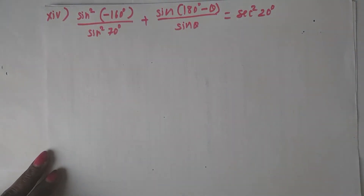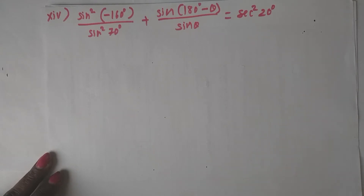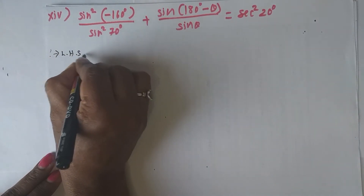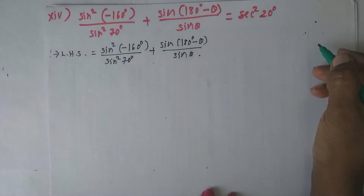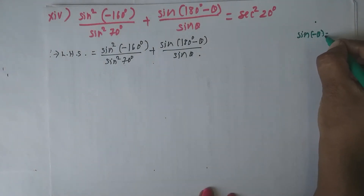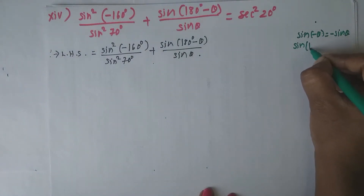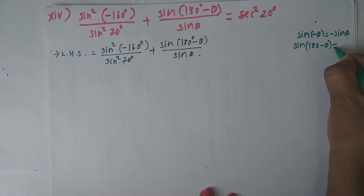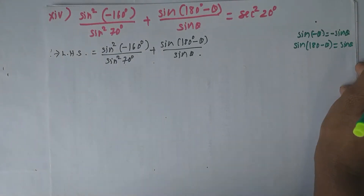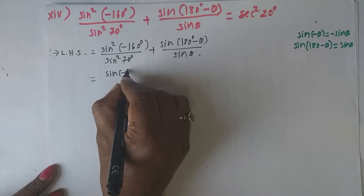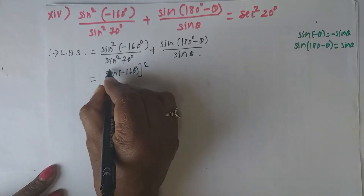Next problem: prove (2cos4x + 1)/(2cosx + 1) = (2cosx - 1)(2cos2x - 1). Write down the left hand side. I will use the formula cos2θ = 2cos²θ - 1. For the angle 4x, this becomes cos4x = 2cos²2x - 1.